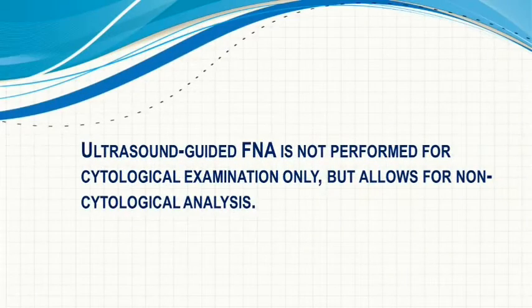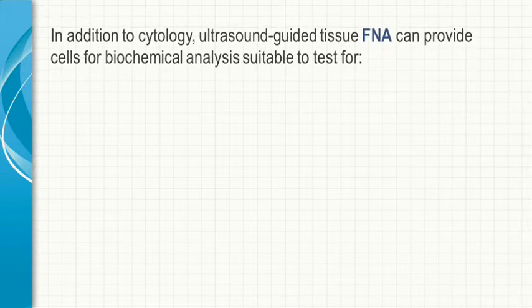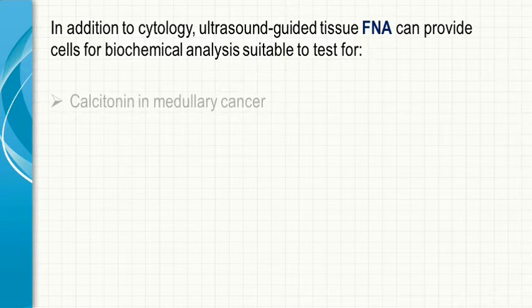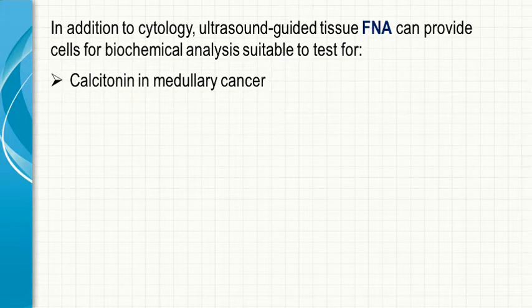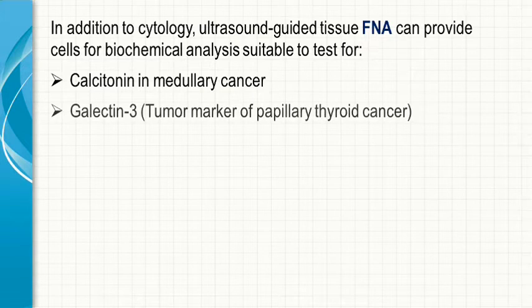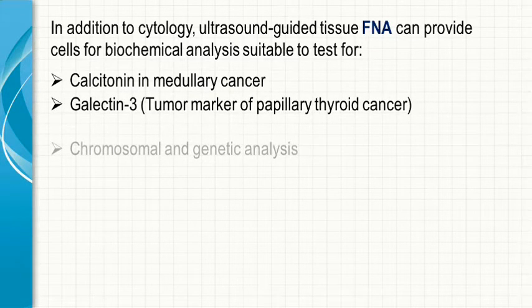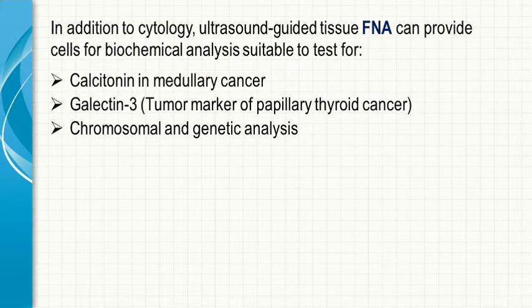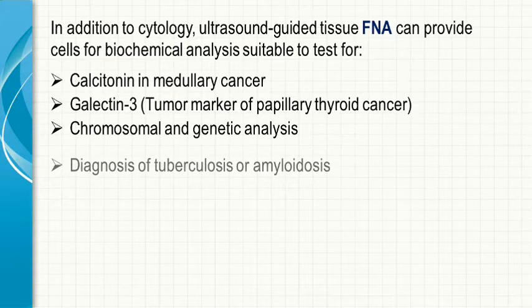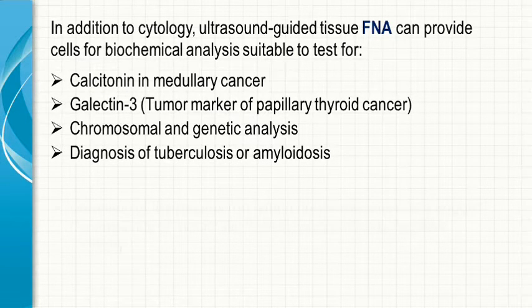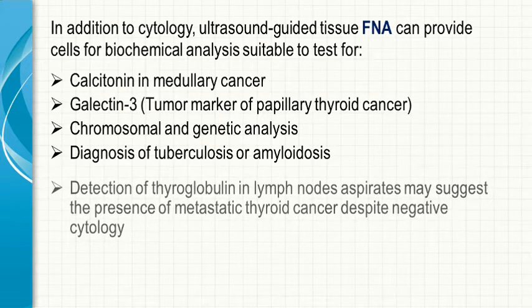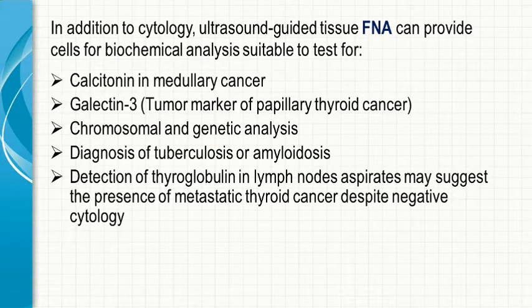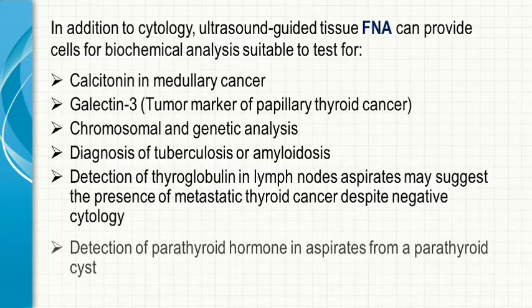Ultrasound-guided FNA is not performed for cytological examination only, but also allows for non-cytological analysis. In addition to cytology, it can provide cells for biochemical analysis suitable to test for calcitonin in medullary cancer, galectin-3 which is a tumor marker of papillary thyroid cancer, cytology, chromosomal and genetic analysis, diagnosis of tuberculosis or amyloidosis, detection of thyroglobulin in lymph node aspirates suggesting metastatic thyroid cancer despite negative cytology, and detection of parathyroid hormone in aspirates from parathyroid cysts.